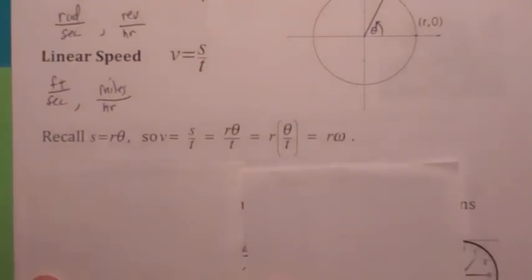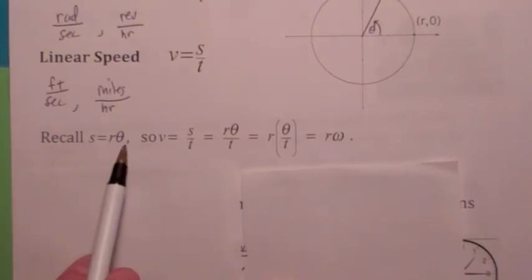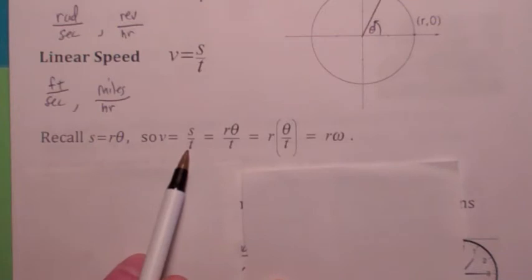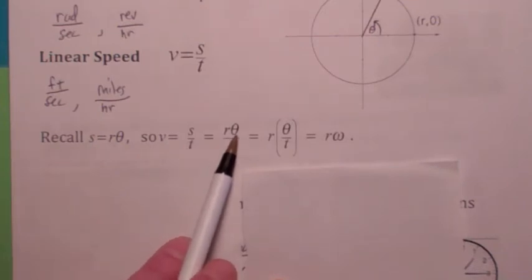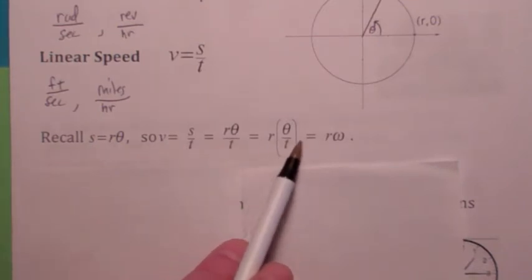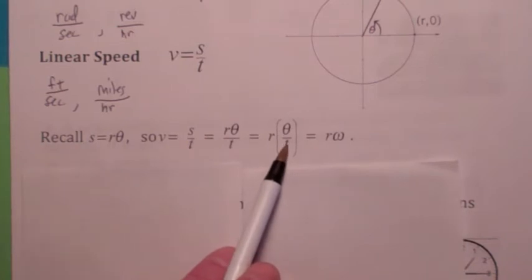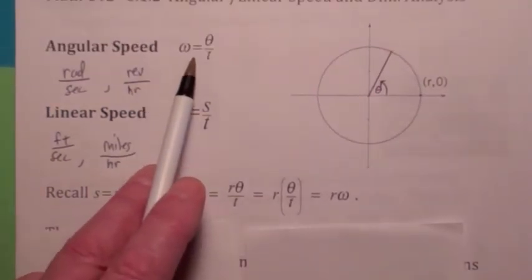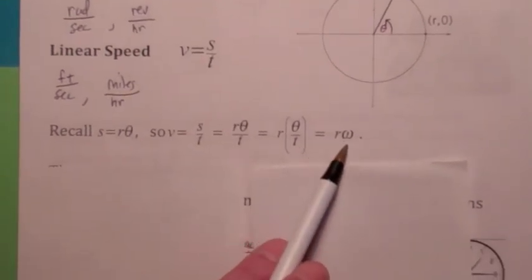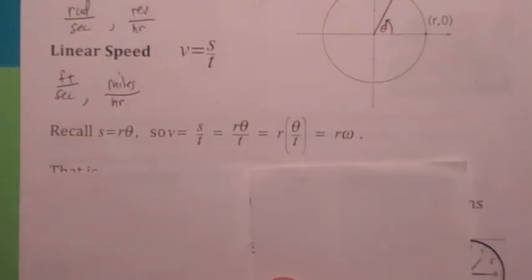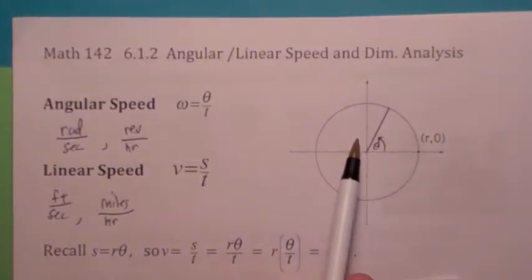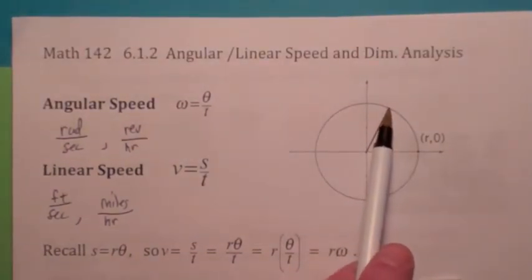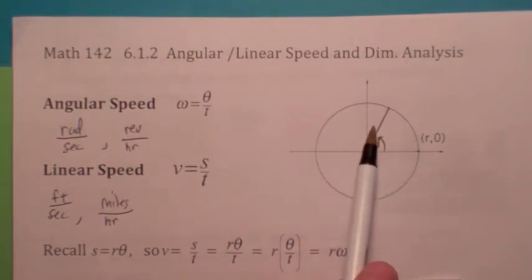So how are they related? It turns out that since s equals r theta, the linear speed — which is the change in distance over time — you could replace s with r theta, and remember theta over t is what we call omega, the angular speed. So we have that the linear speed is equal to the radius times the angular speed. The linear speed is bigger when the radius is bigger, and smaller when the radius is smaller.